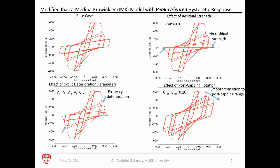Moving on to the effect of various parameters on the hysteretic response of a structural component: the first figure shows the base case in terms of moment-rotation. In the figure on the right, you see the effect of residual strength — when zero residual strength is assumed, the component fully deteriorates all the way down to zero strength. In the third figure, the cyclic deterioration parameters are set to 0.8 compared to 1 in the base case, showing faster cyclic deterioration in strength and stiffness. In the last figure, you see the effect of post-capping rotation, with a smooth transition to the post-capping range compared to the base case where a post-capping rotation capacity of 0.01 radians is assumed.